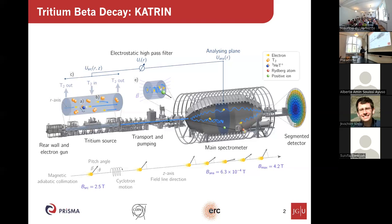Why is that so complicated? First of all, this thing is really, really big. But that's not the only thing — the electric and magnetic fields need to be understood extremely precisely, because we are trying to measure a 0.1 electron volt neutrino mass with electrons that have an energy of almost 20 kV. So we need a relative precision on their energy of better than around 10 to the minus 5, and that's a tremendous challenge.